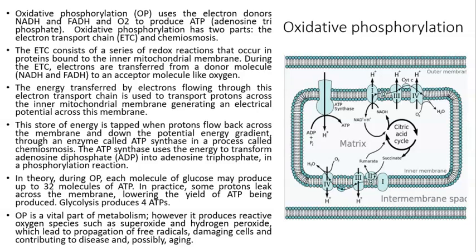In theory, during oxidative phosphorylation, each molecule of glucose may produce up to 32 molecules of ATP. In practice, some protons leak across the membrane, lowering the yield of ATP being produced. Glycolysis produces a net of 2 ATP.